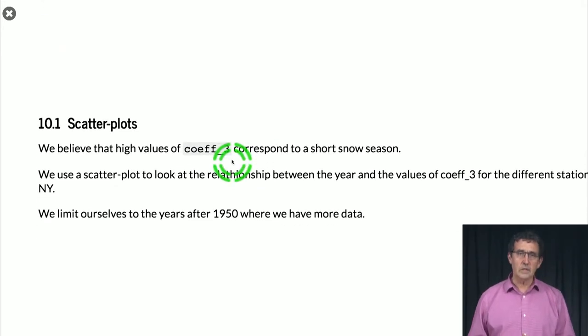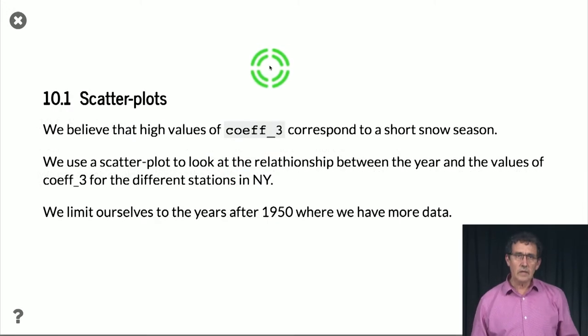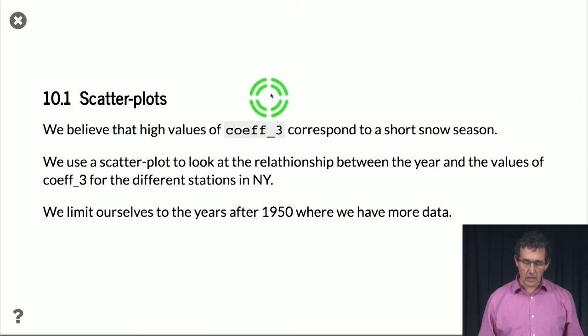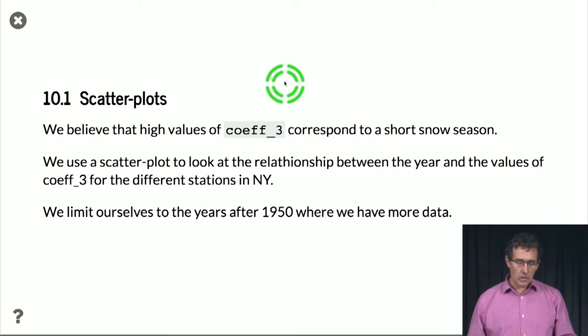We can start to look at dependencies between different things. We're looking at our coefficient 3, and we want to relate it to years. The simplest way to try to do that is using a scatter plot.